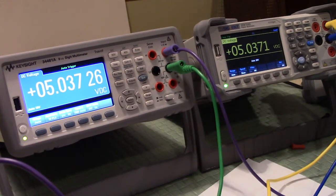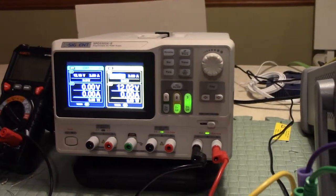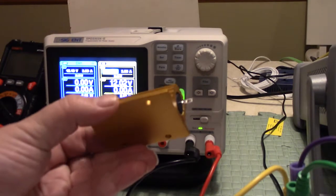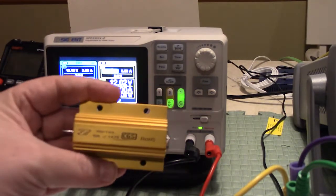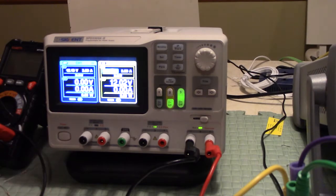Next I'm going to set up for the loaded test. We have a 15 ohm 100 watt resistor here and we're going to actually draw some current from this thing and see how clean the voltage is when you're drawing a significant amount of current.